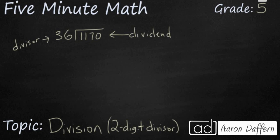We're looking to see how many times 36 can divide into 1,170. Our answer is going to be called the quotient. That's what we're looking for. Now, 2-digit division is similar to 1-digit division. You just have to do a little bit of estimation.